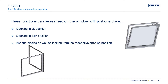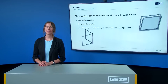Comparing the feasible functions with a chain drive application: when opening a window sash with a chain drive, it is limited to either the turn position or the tilt position. Both types of opening combined with a chain drive are not possible. Therefore, the F1200 Plus is the perfect solution for tilt-and-turn windows.